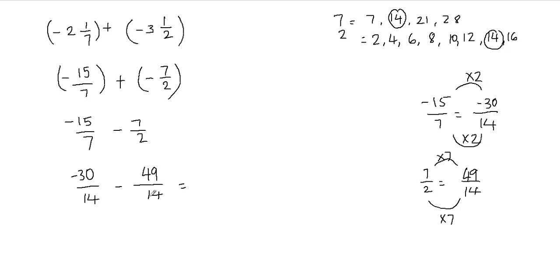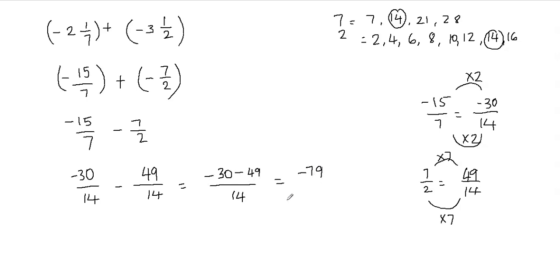Now you see that I have a common denominator so I can go ahead and add or subtract the fractions. Now keep in mind that this is negative 30 minus 49 over 14. I have the common denominator of 14, and we never add or subtract the denominator, so we're going to leave that as it is. In the numerator, I have negative 30 take away 49, so: negative 30 take away 49. Negative 30 take away 49 is equal to negative 79. And then we never change the denominator, so that's going to stay 14.